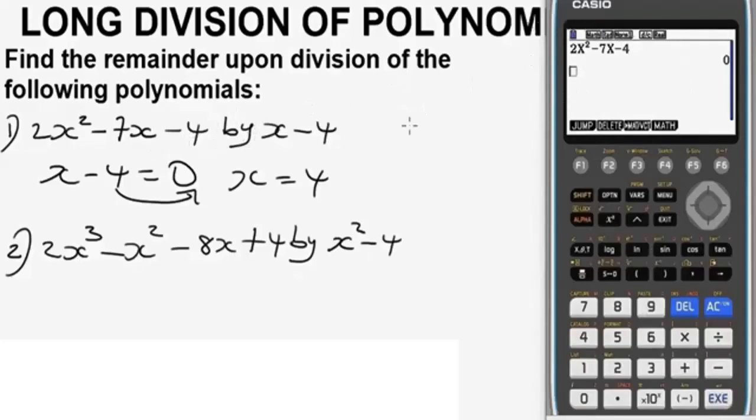So let's delete everything here and solve question two. Question two says we are given this polynomial, and we are dividing it with this value.